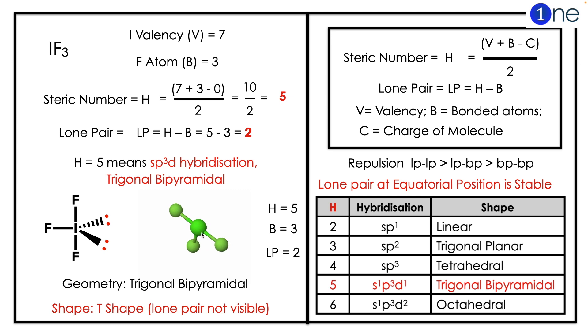The iodine valency is 7, fluorine atoms are 3, so H will be 5. The lone pair will be H minus B, which gives 2. So H equals 5 means sp3d hybridization with trigonal bipyramidal structure. You have two lone pairs.